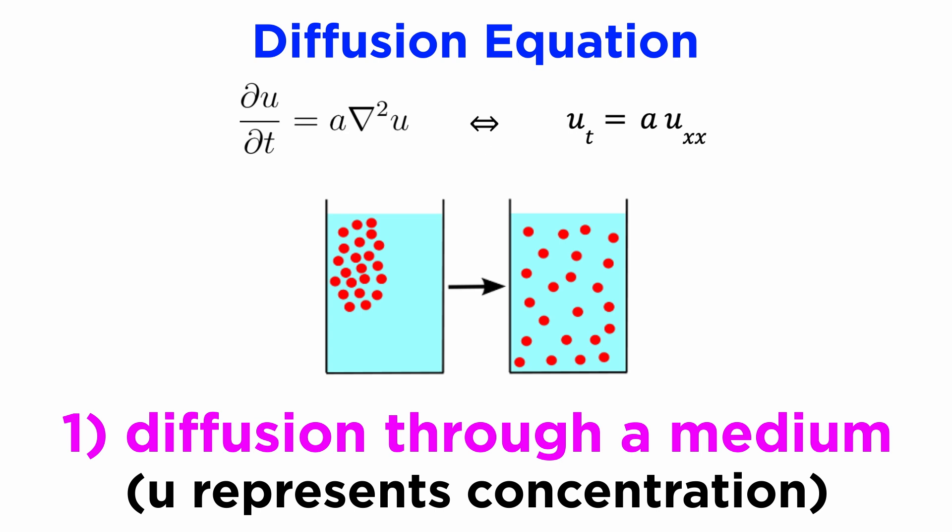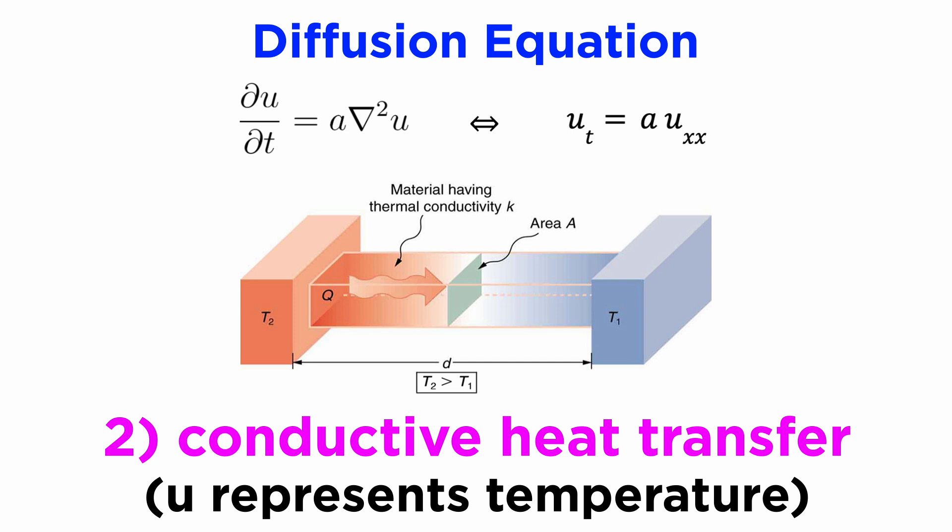Two of the main contexts where this PDE comes up are the diffusion of concentrated particles through a medium, hence the name, where u represents the concentration of the particles, and in conductive heat transfer, where u represents the temperature of the medium, and in this context it's often known as the heat equation.